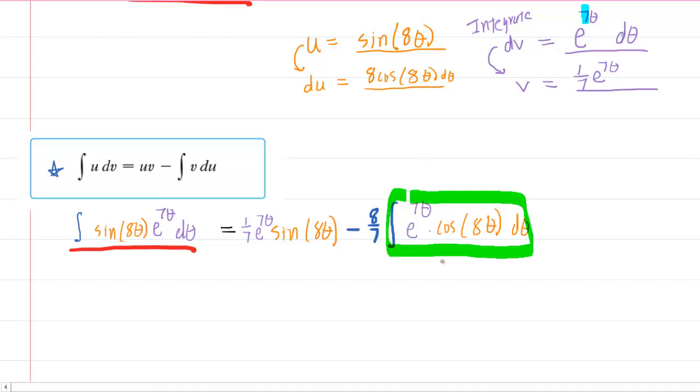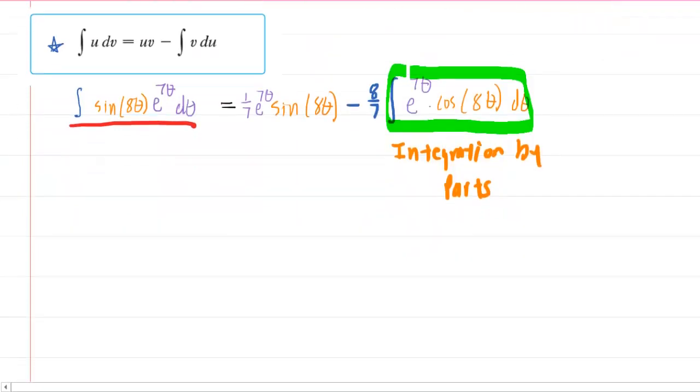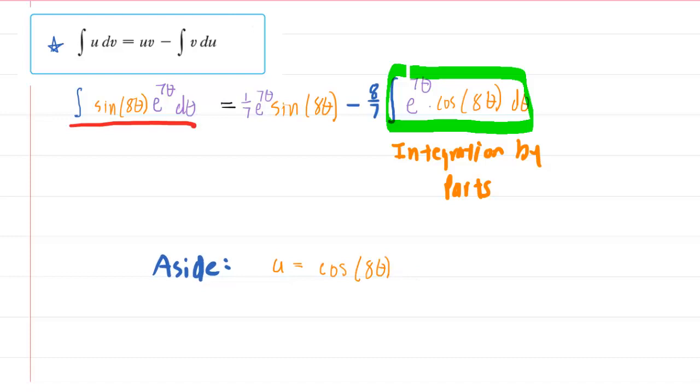But here's the real problem, is we are left with this integral, which is as complicated as the original problem. So, we're going to actually have to go ahead and use integration by parts again on this particular expression, because there's really no other easy way of integrating it. So, we're going to take an aside, and hopefully this keeps us organized. And our aside is once again to do integration by parts on this expression highlighted in green. Now, as before, we're going to let u equal the trigonometric function. So, that's going to be the cosine of 8θ, and then the dv will equal the rest of the expression. So, the e to the 7θ dθ.